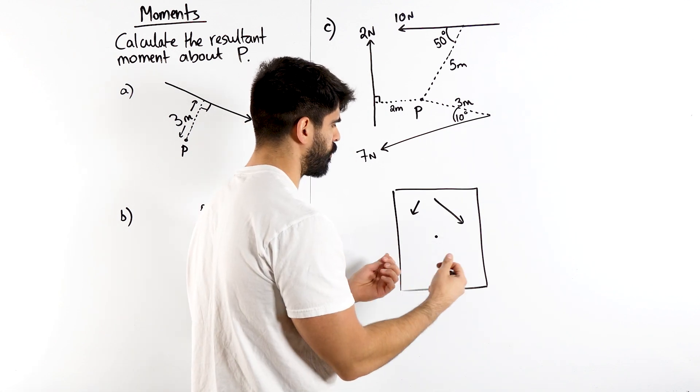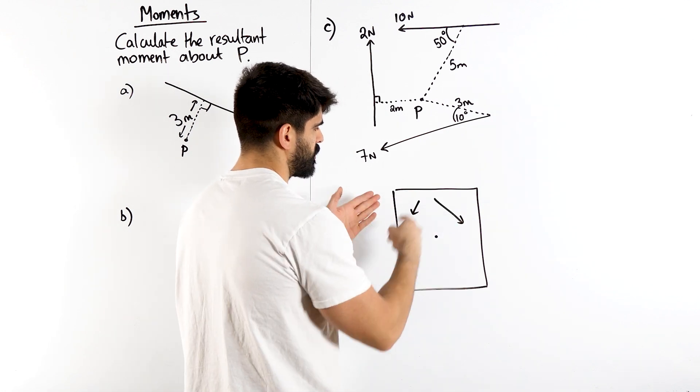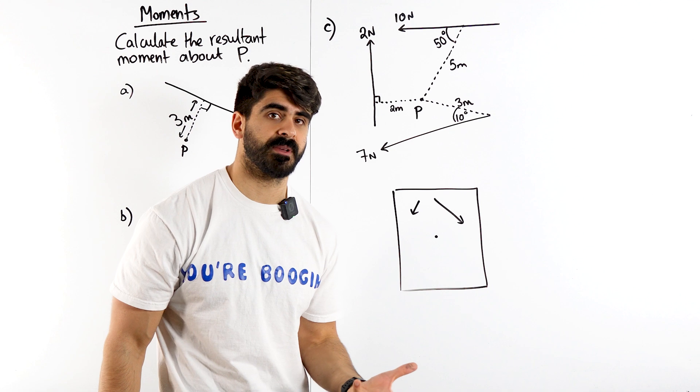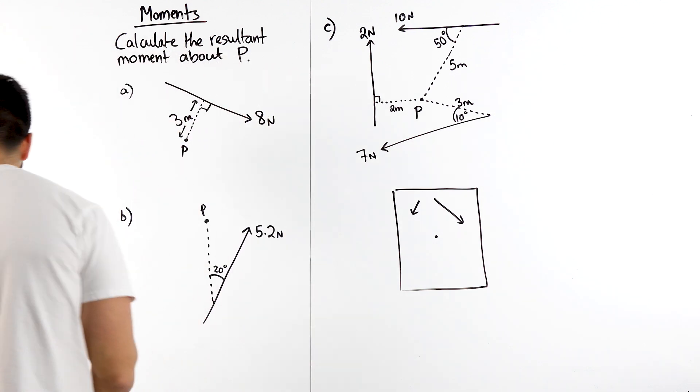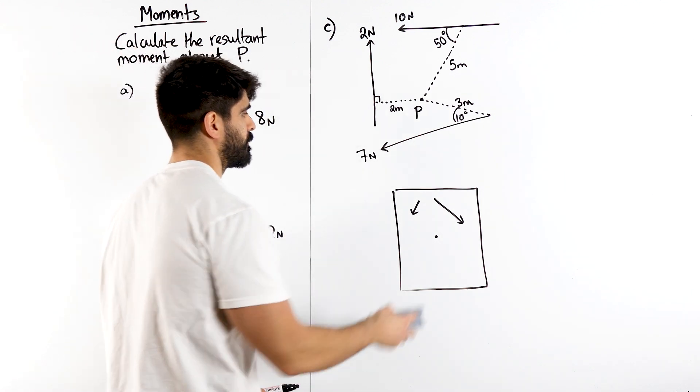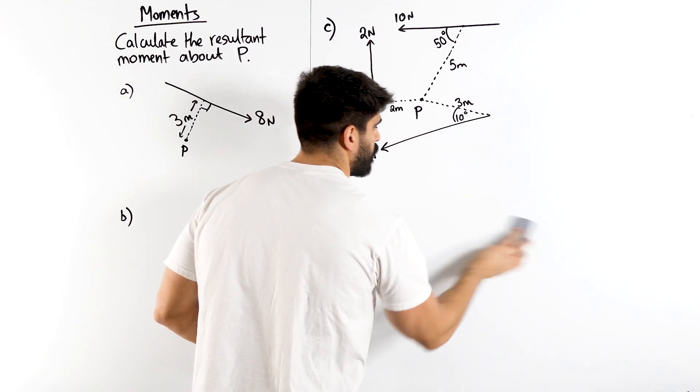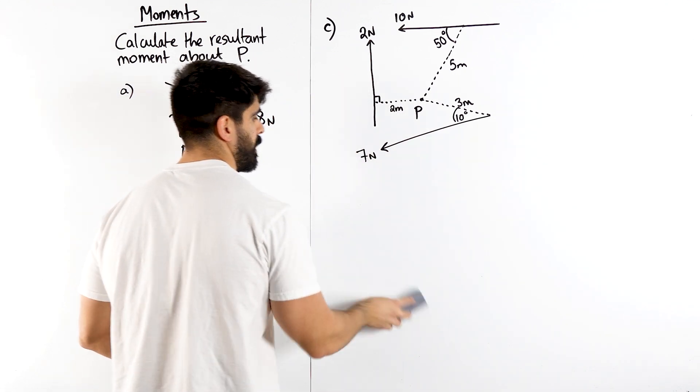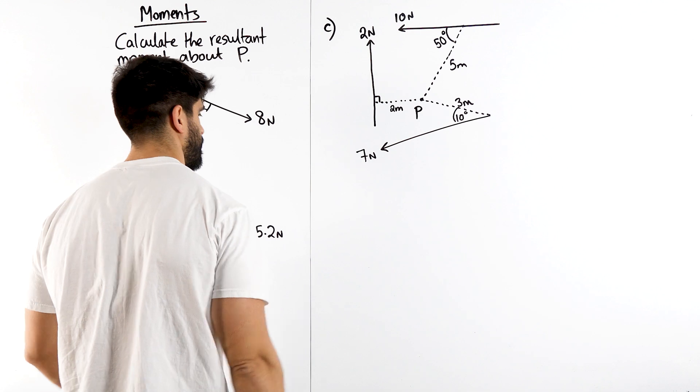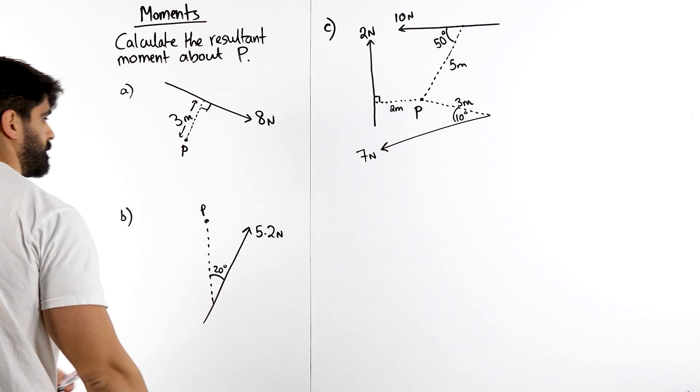We're going to calculate the moment force, whether it's clockwise or anticlockwise, and just see which one's bigger. So how do we calculate that? It's very simple. The moment force is simply force times perpendicular distance. Force times perpendicular distance.